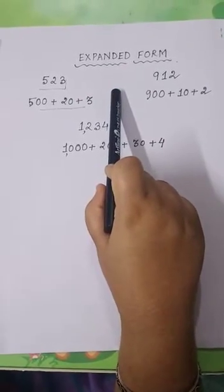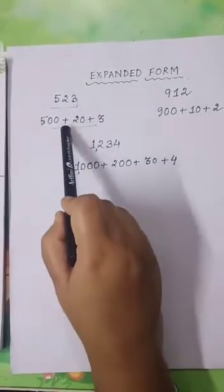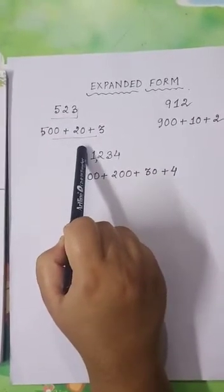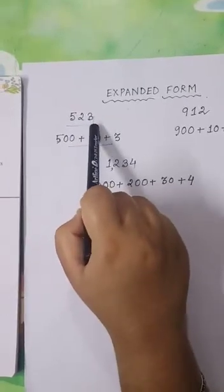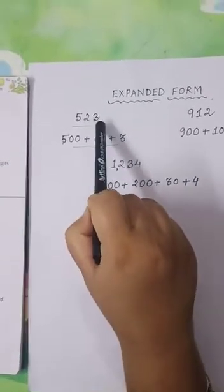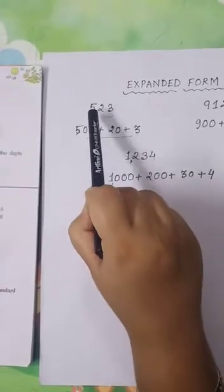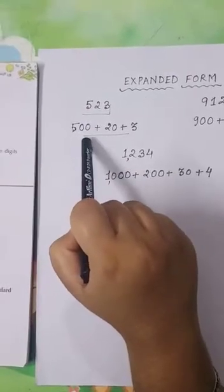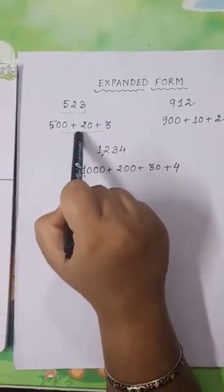Let me explain this with the help of an example. I have taken the number 523. If I break this number with the help of addition symbol and by writing the value of each of these digits, I have written it in expanded form. The digit 3 is in the 1's place, so the value of 3 is 3. The digit 2 is in the 10's place, so the value of 2 is 20. And the digit 5 is in the 100's place, so the value of 5 is 500. So by writing the value of each digit and using addition symbol between them, I have written 523 in expanded form.